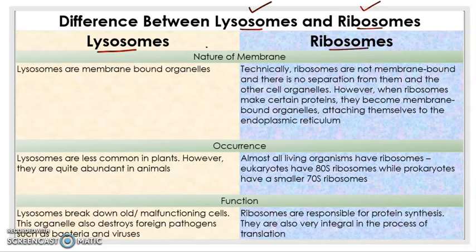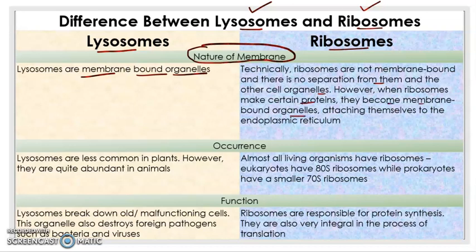The first point is on the basis of the nature of the membrane. Lysosomes are membrane-bound organelles, meaning they are covered by a membrane. On the other hand, ribosomes are not membrane-bound — there is no separation between them and the other cell organelles. However, when ribosomes make certain proteins, they become membrane-bound organelles by attaching themselves to the endoplasmic reticulum.